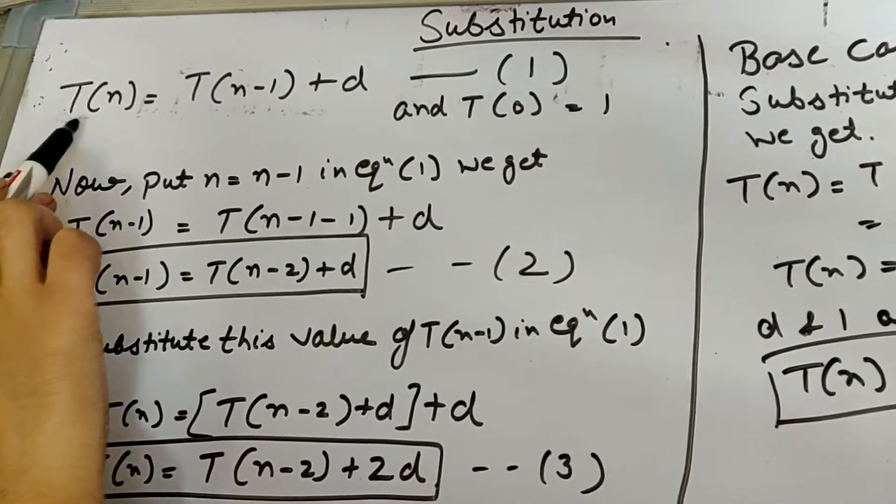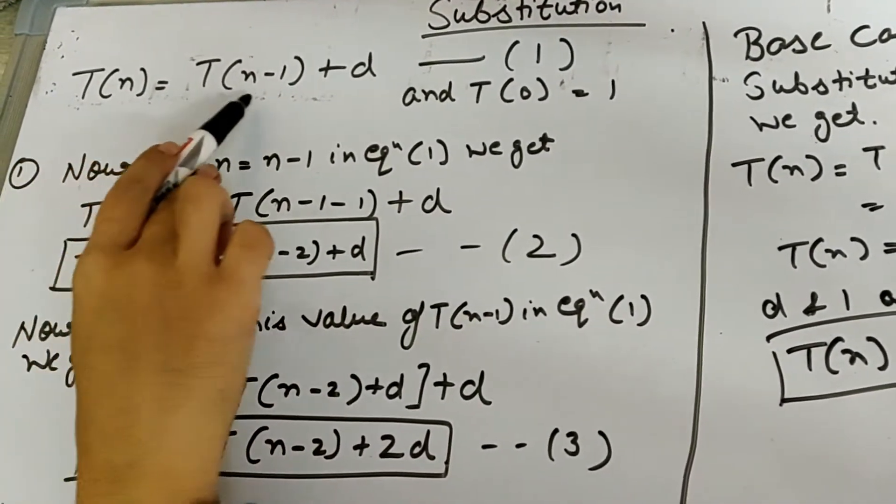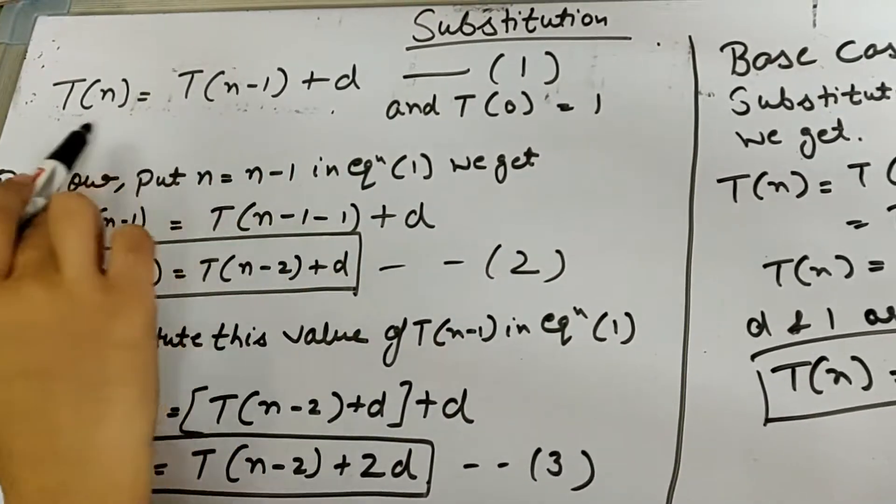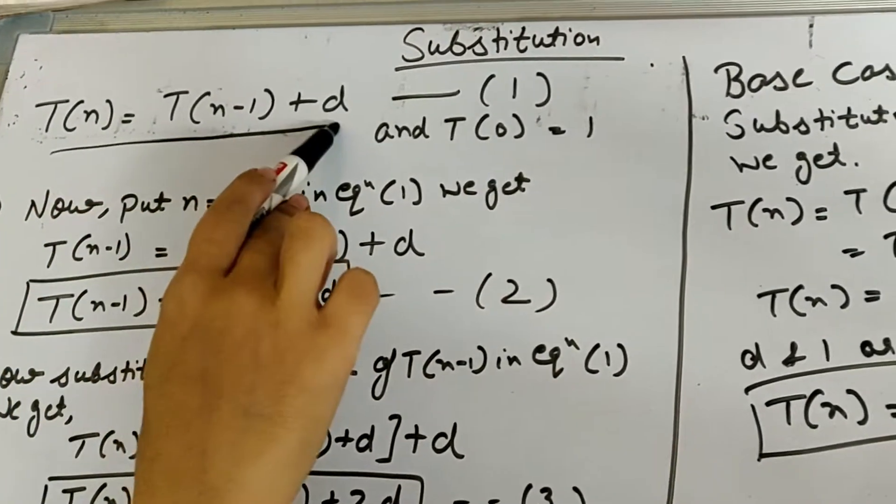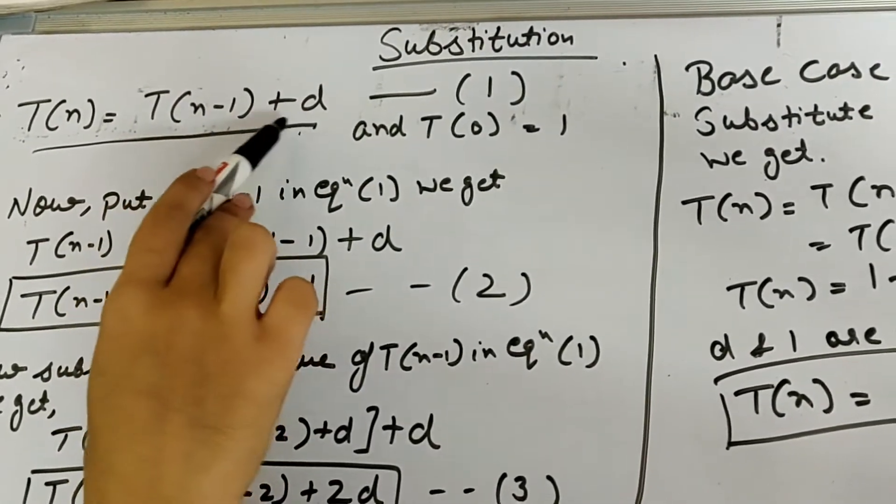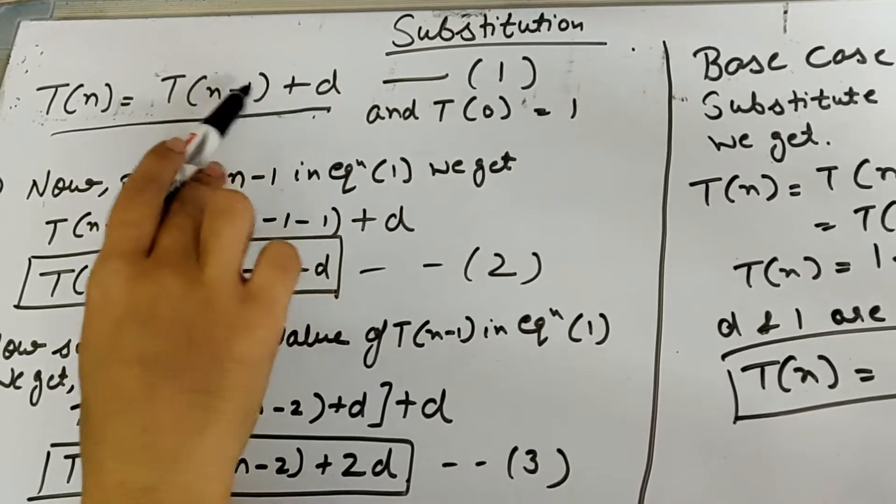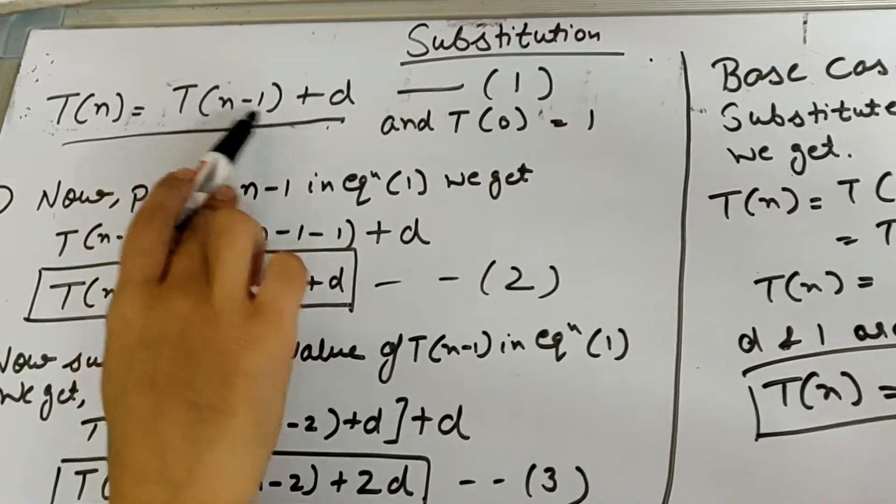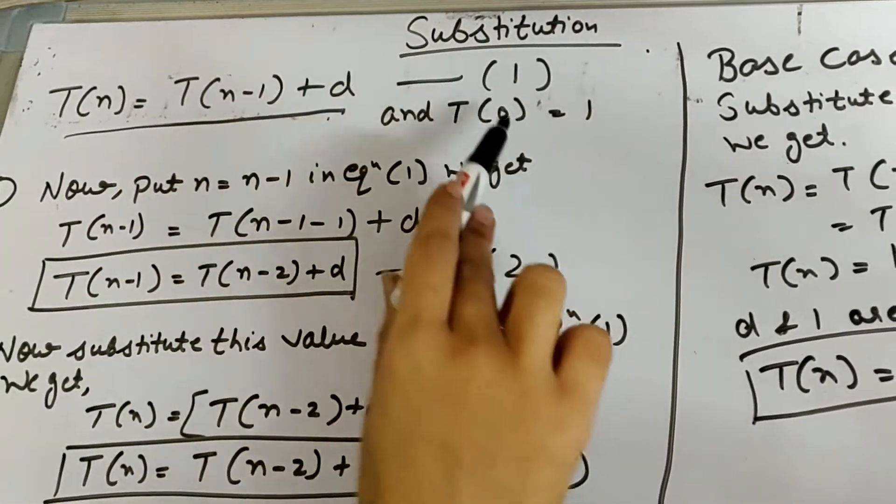So T(n) is equal to T(n-1) plus d. This is the recurrence form of the factorial. In the previous lectures I have already explained how to derive a recurrence relation for the factorial of a program.